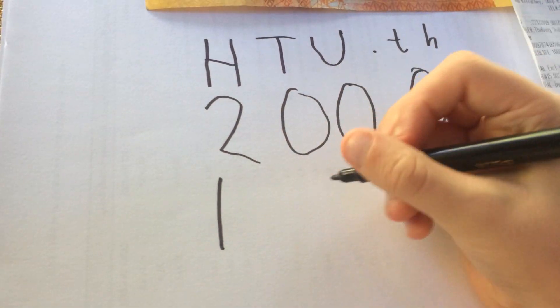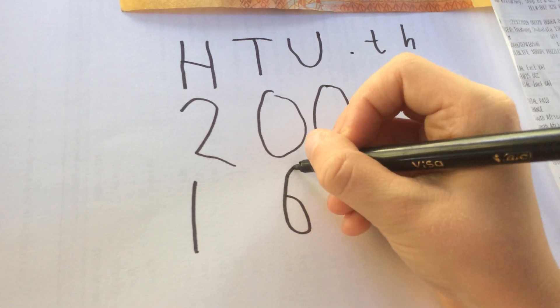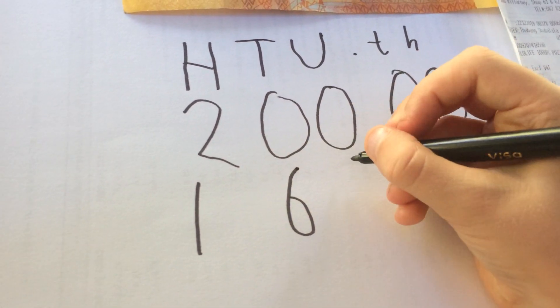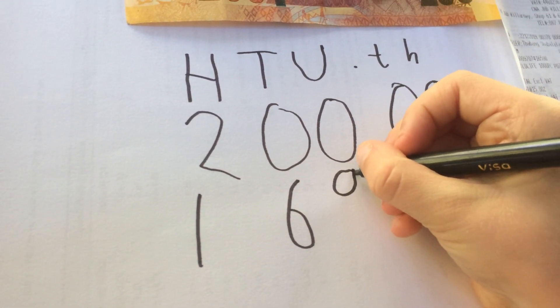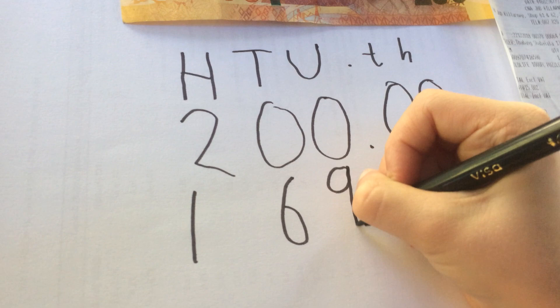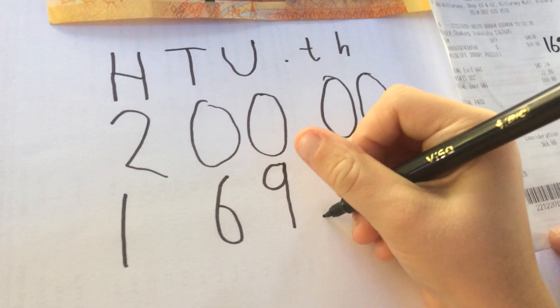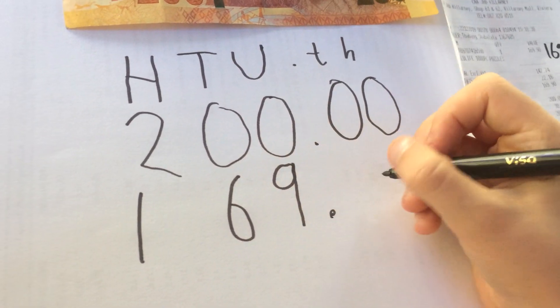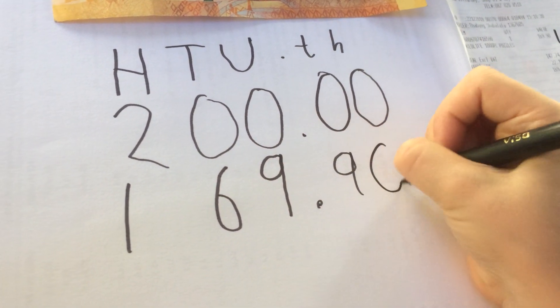So there's 1 in the hundreds, 6 in the tens — that's 60 Rand — and 9 in the units. We have a decimal point there, and 90 cents.